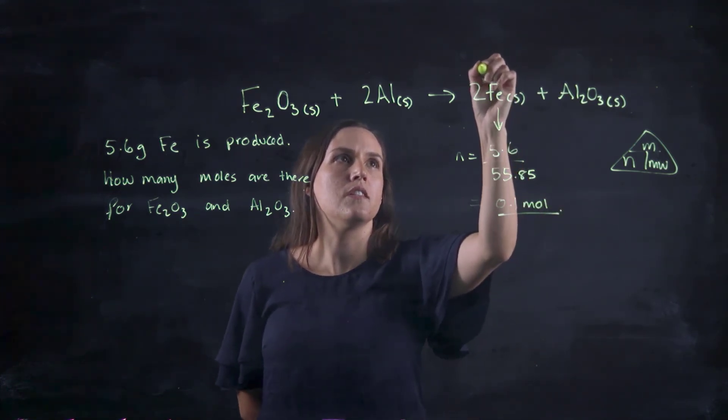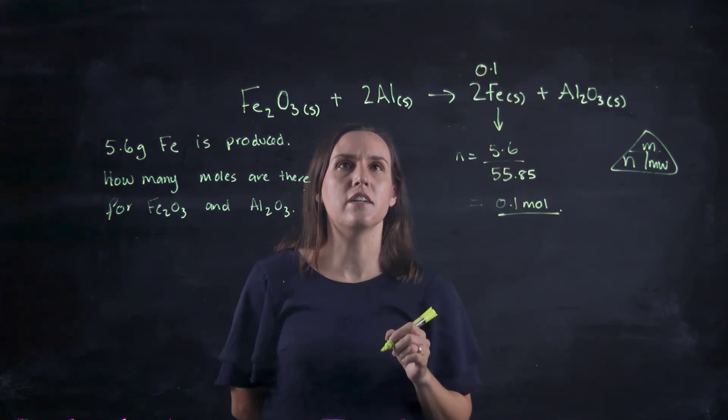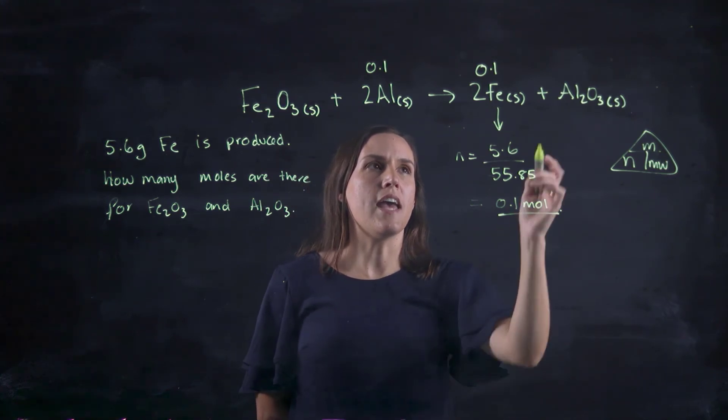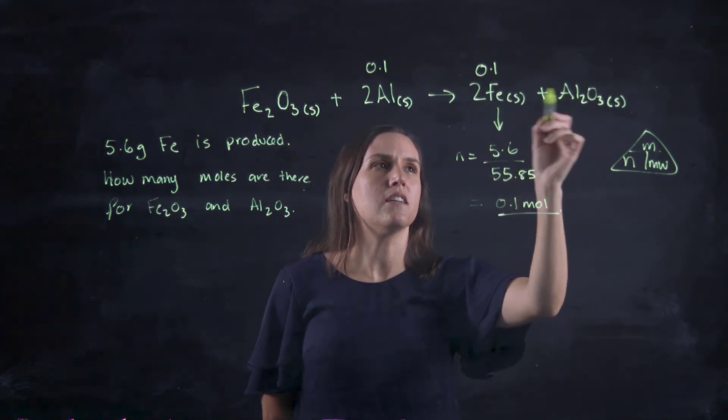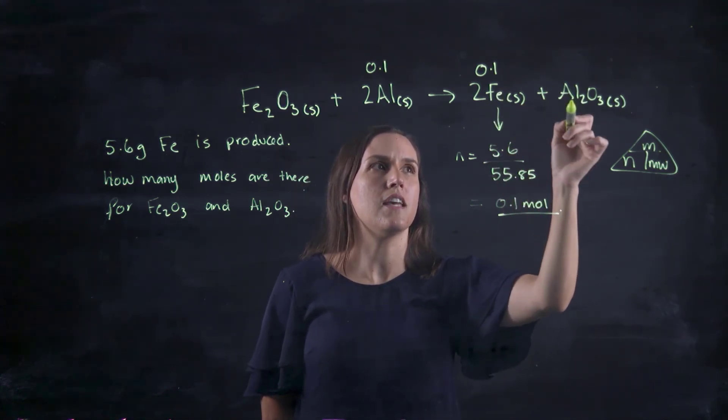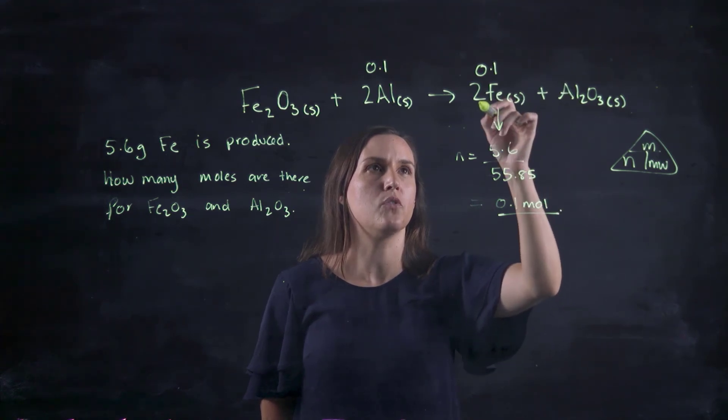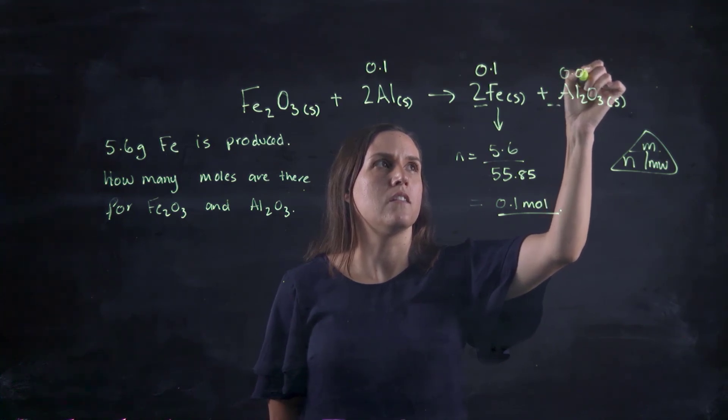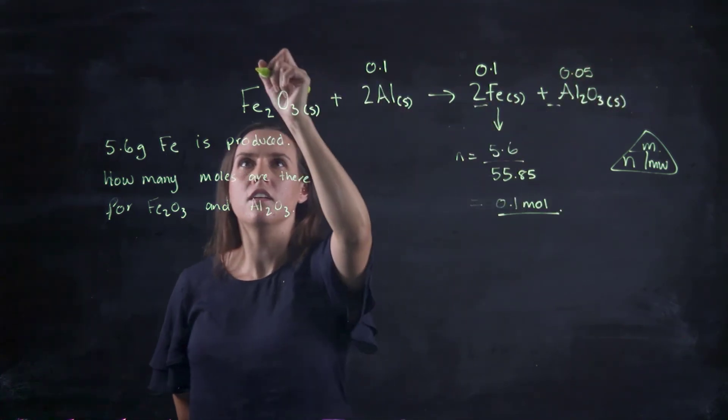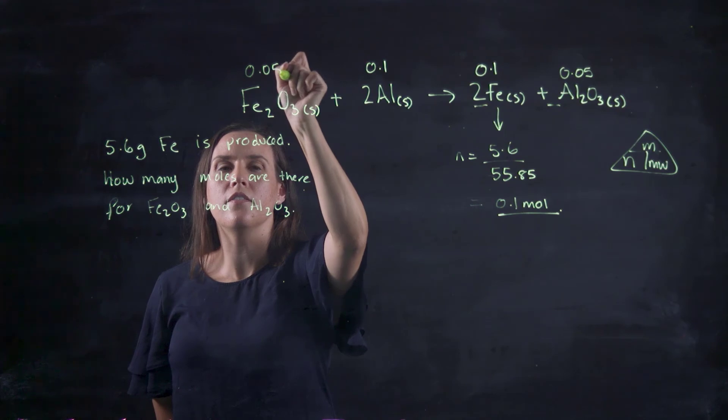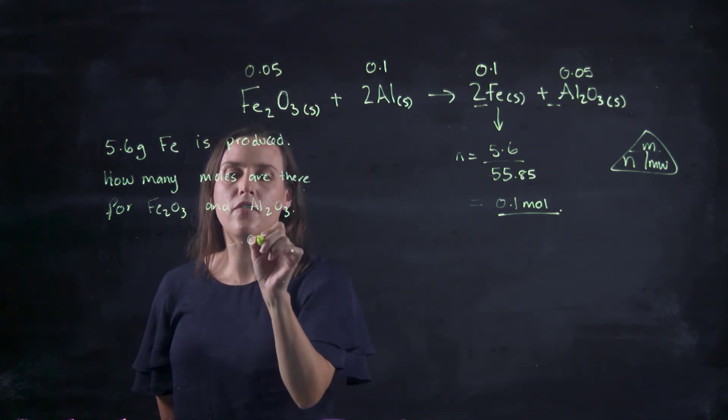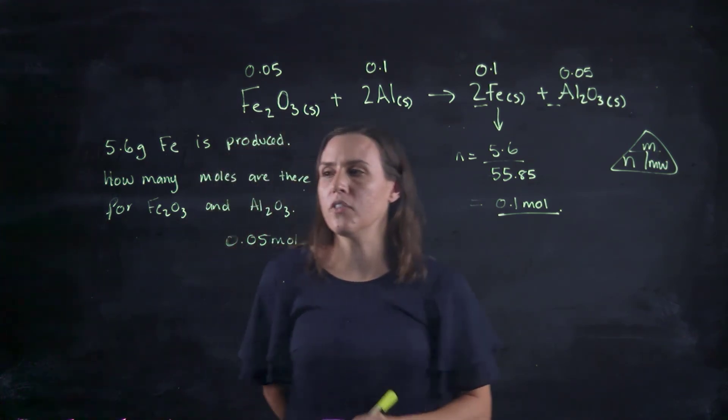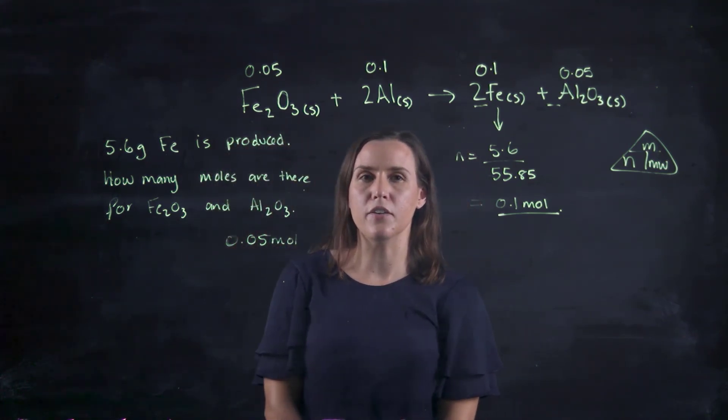So we've got 0.1 mole. Okay, so we've got 0.1 here for our two. That means we've got 0.1 for our other two. And looking at the relationship here, so this is twice as many as we have for this one because we've got 2 to 1. So this will be half the amount, 0.05, 0.05. So the answer would be 0.05 mole for each one of that Fe2O3 and Al2O3.